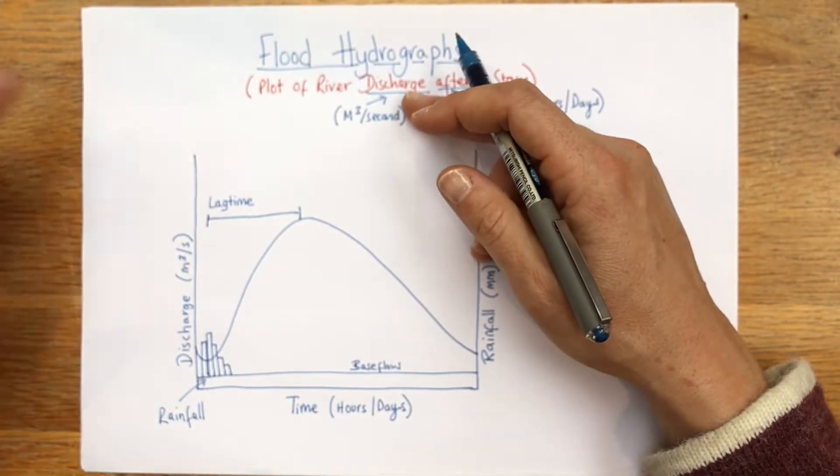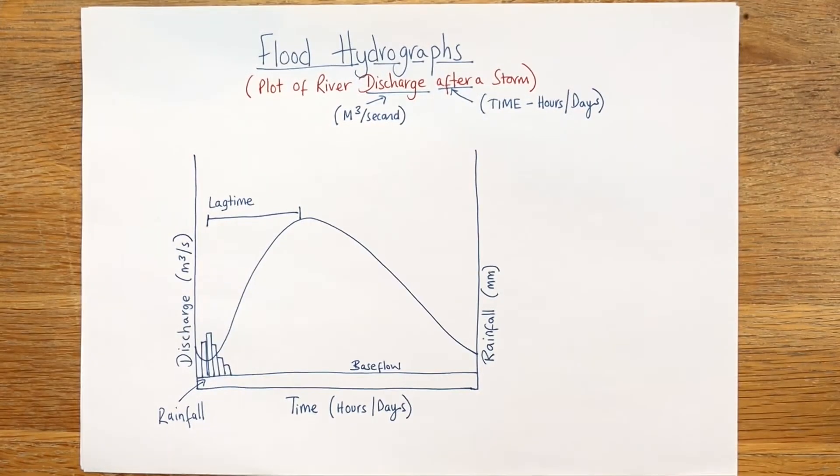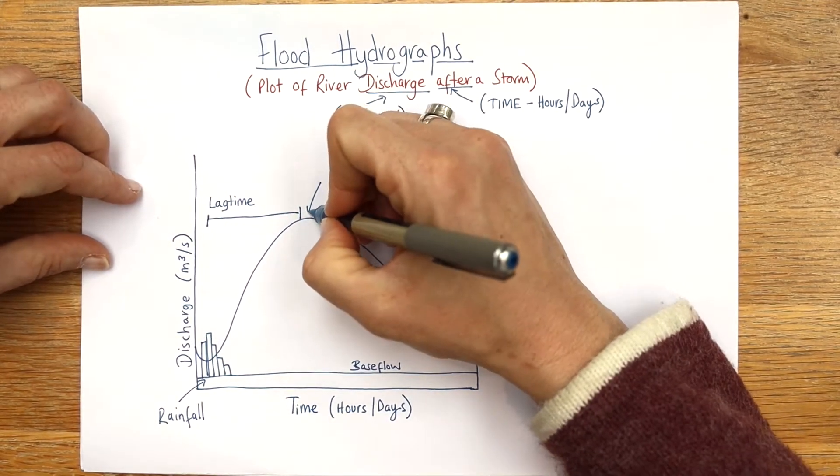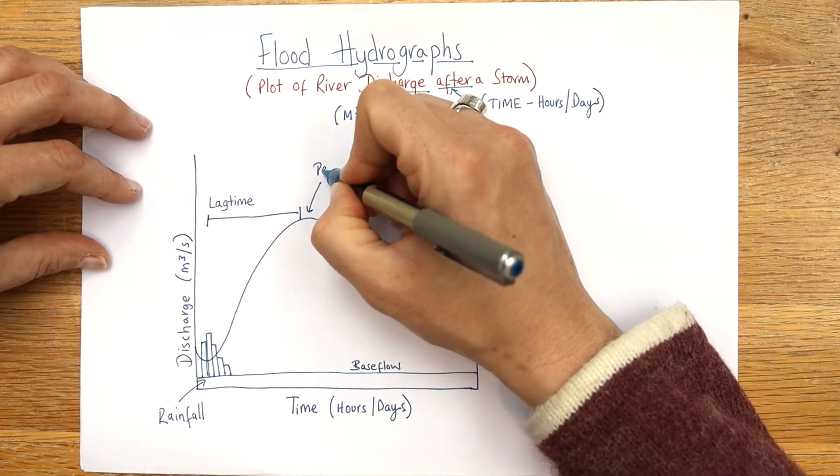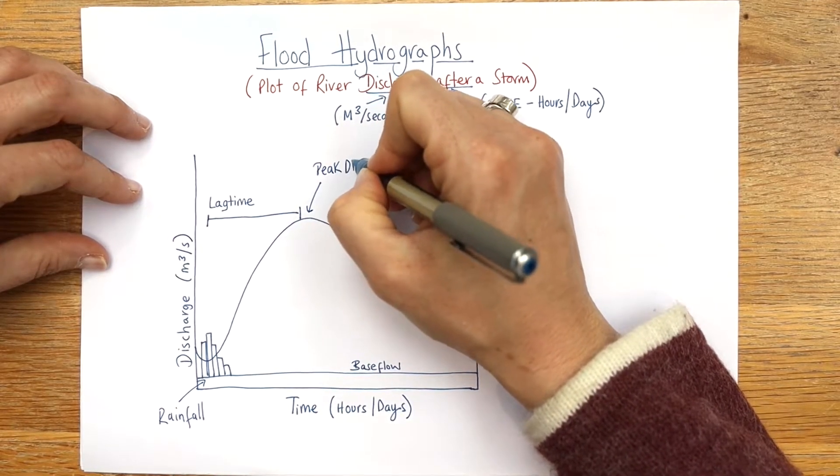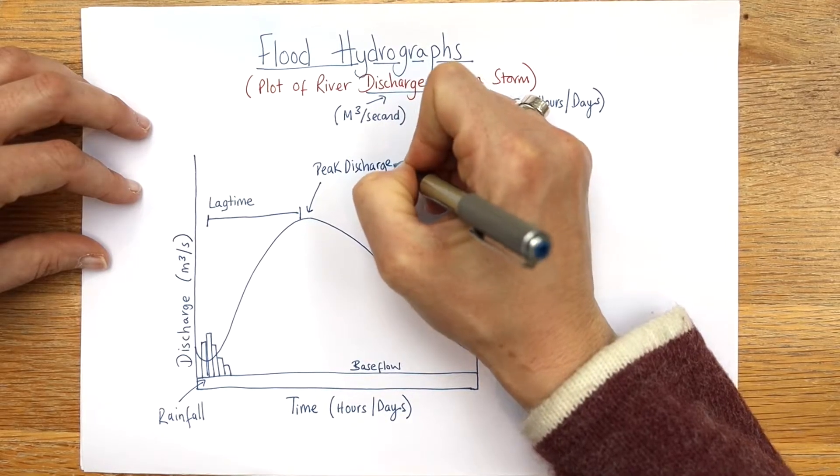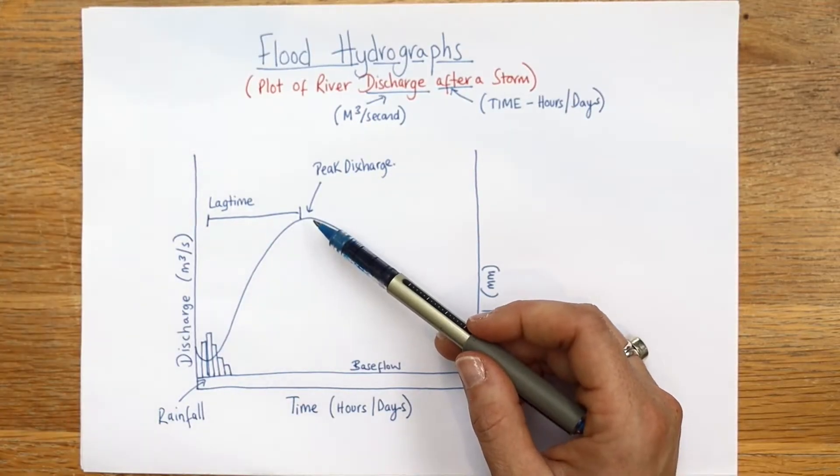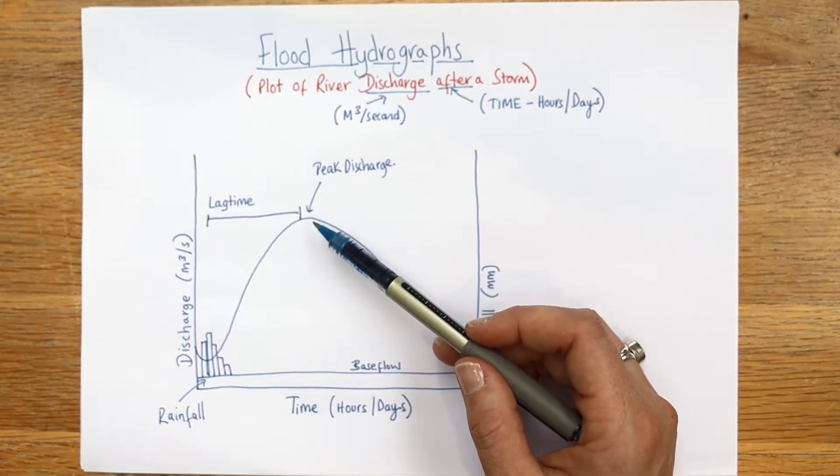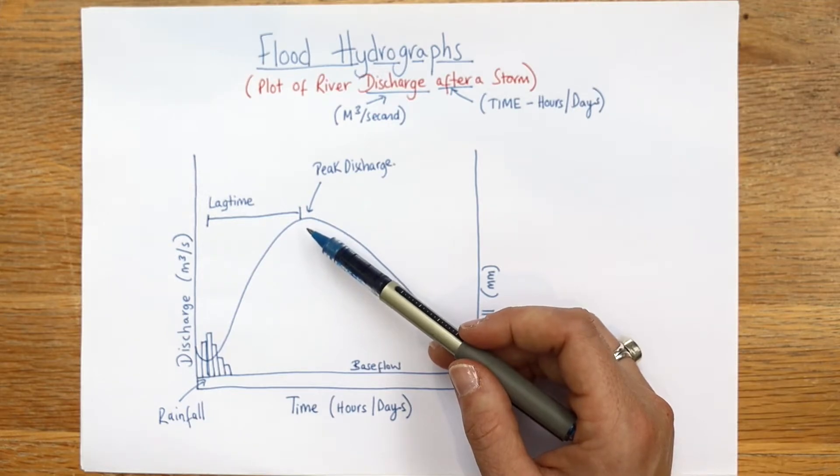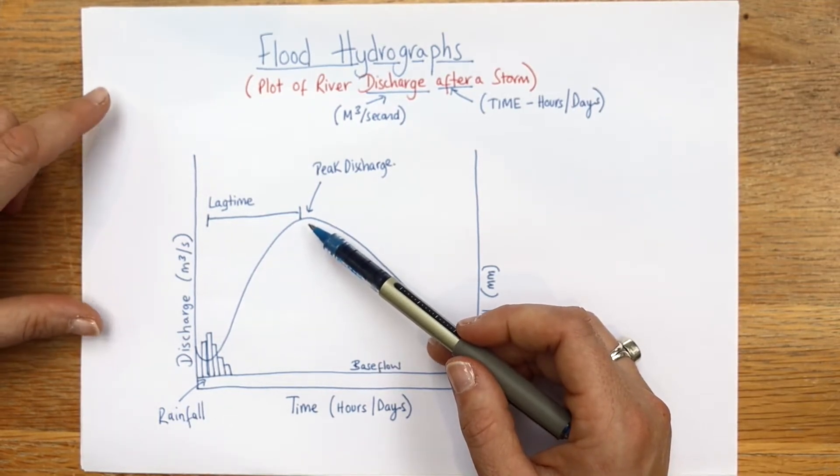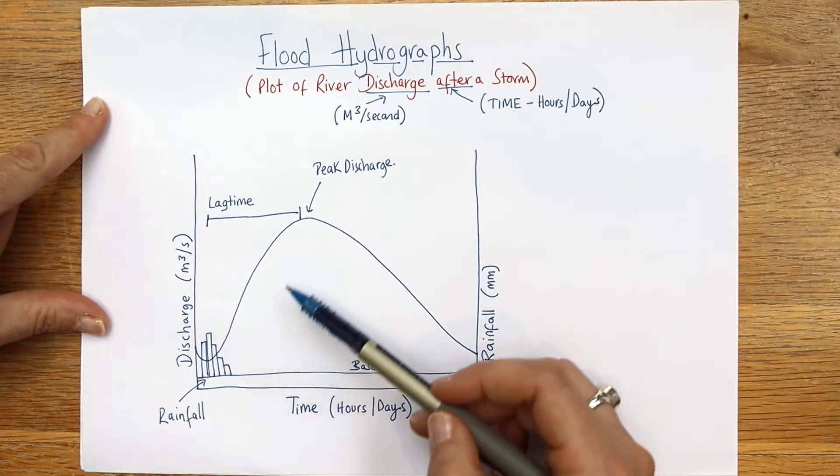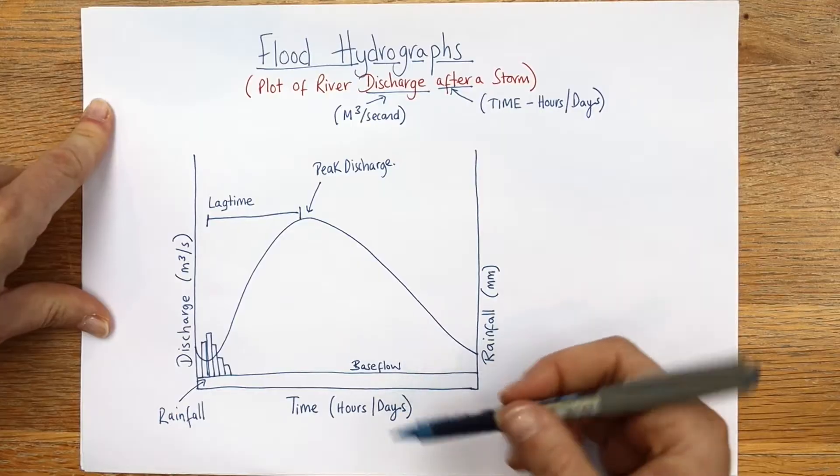Next up we need to label our peak discharge. So that's like the biggest flow of the river. If this was a real flood event, that's where buildings would be being flooded, bridges would be destroyed, the river is running fast and high and flooding the surrounding area. Then you can see it drops back down slower, so it rises quicker and drops back down slower.